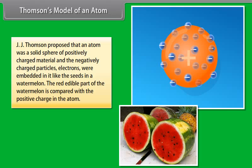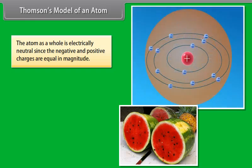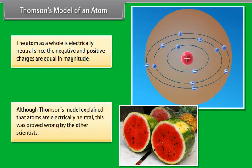The red edible part of the watermelon is compared with a positive charge in the atom. Thompson stated that an atom consists of a sphere with positive charge. Electrons are embedded in that sphere. The atom as a whole is electrically neutral since the negative and positive charges are equal in magnitude. Although Thompson's model explained that atoms are electrically neutral, this was proved wrong by the other scientists.